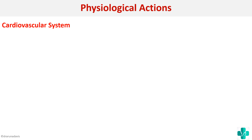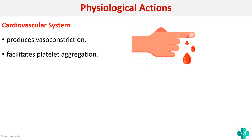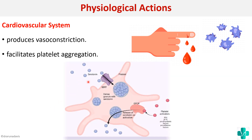On the cardiovascular system, serotonin basically produces vasoconstriction — it wants to stop bleeding. It promotes vasoconstriction and facilitates platelet aggregation. Recall that in the first step of temporary hemostasis, platelet activation and aggregation occur, and serotonin enters the platelets during this process. So in the cardiovascular system, serotonin helps stop bleeding by promoting vasoconstriction and platelet aggregation.